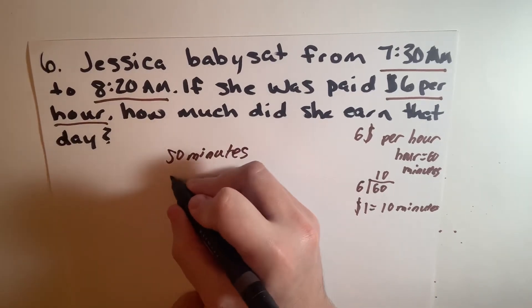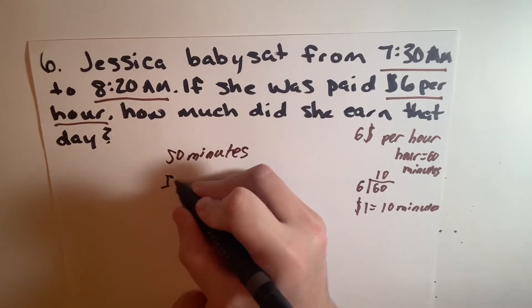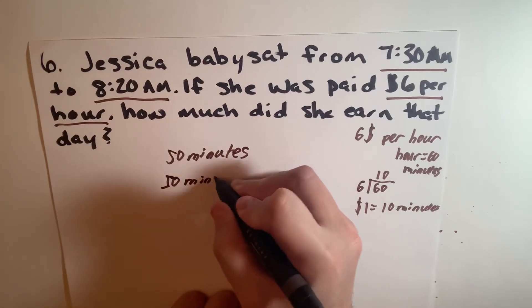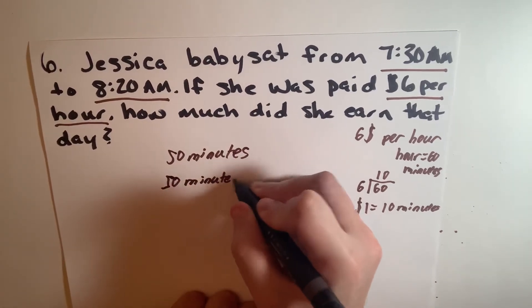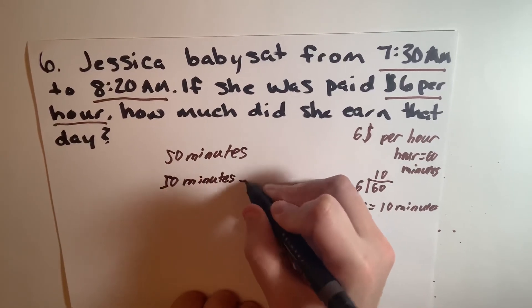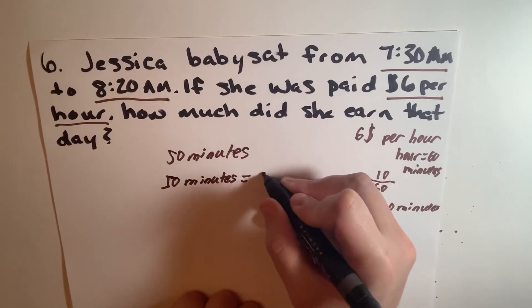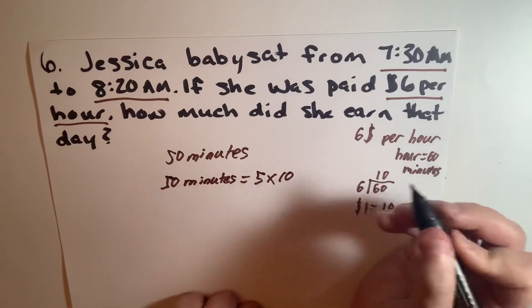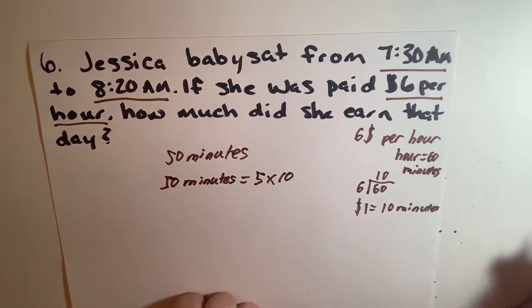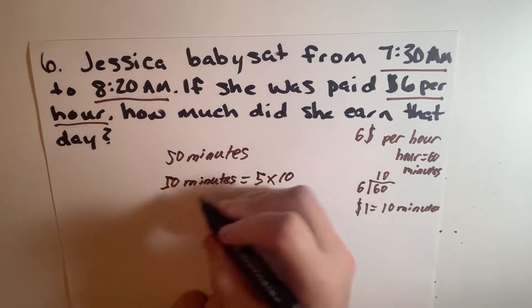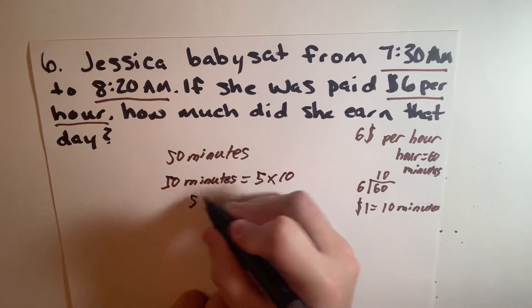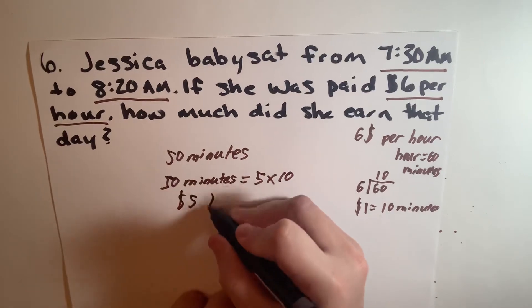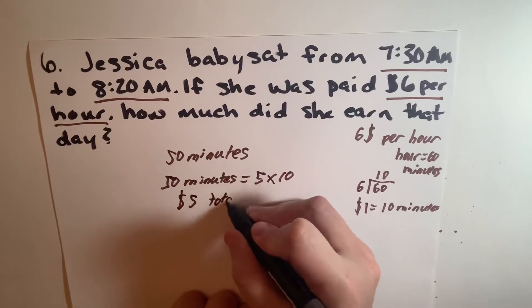then we know 50 minutes is the same as 5 times 10. So we get $5 total.